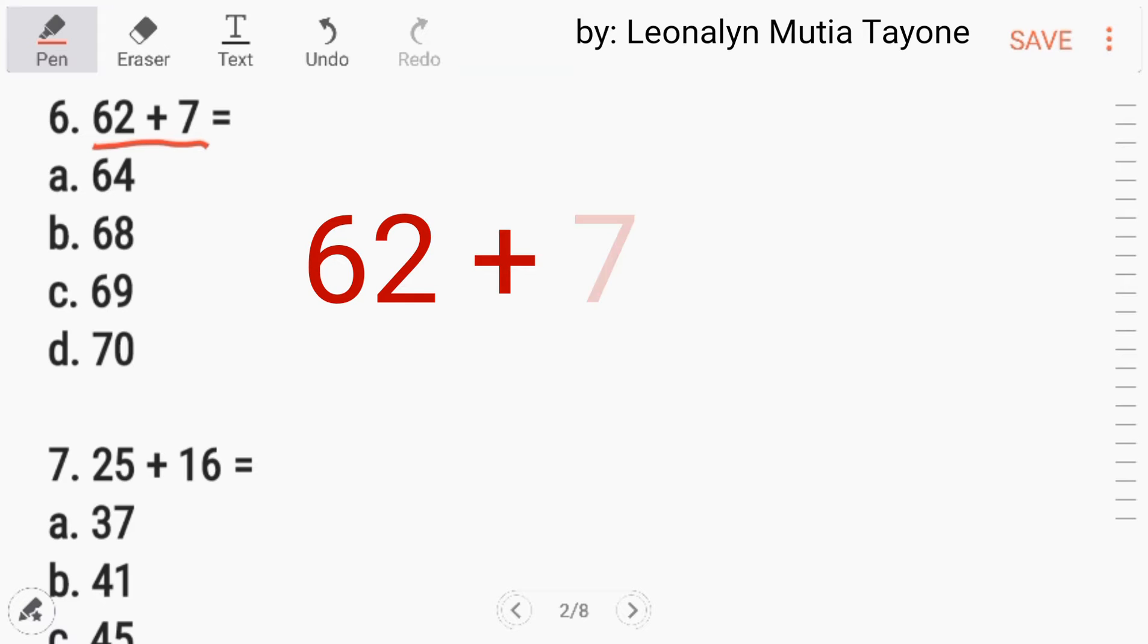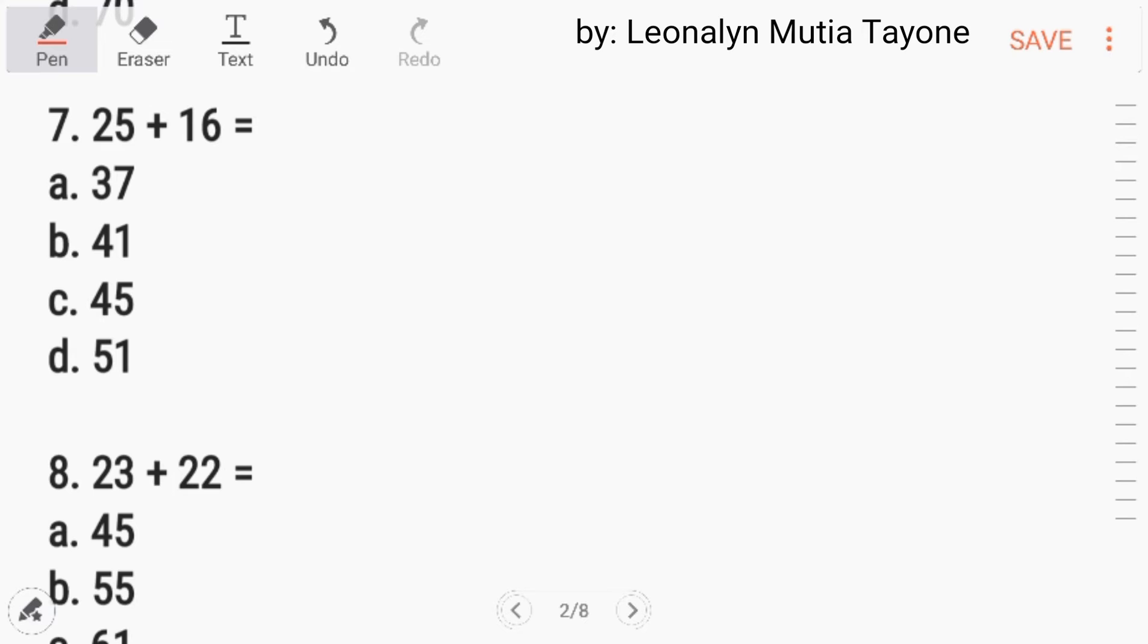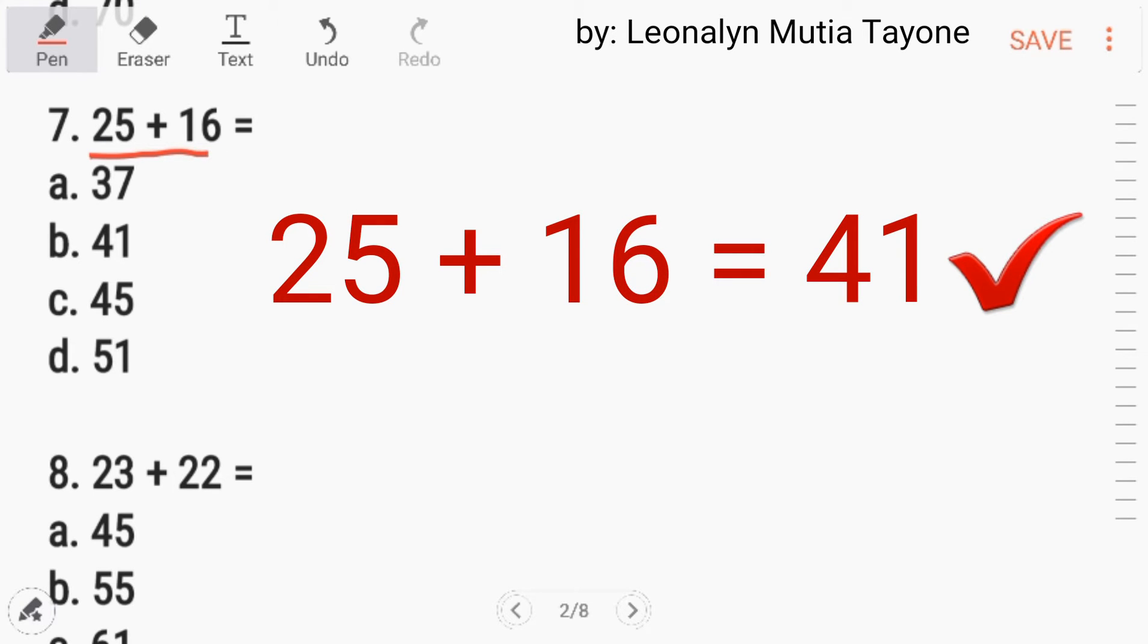Tapos sa choices naman, isa lang yung 7 kasi 7 lang din naman tong last. So the answer is letter A. Number 6. 62 plus 7. This is basic addition and the answer is 69, Letter C. Number 7. 25 plus 16. This is basic addition. 5 plus 6 is 11. So ang choices mo lang ay yung B or D. Wag mo nang tingnan yan siya. 25 plus 16 and this is 41. So the answer is letter B.